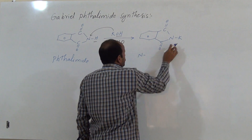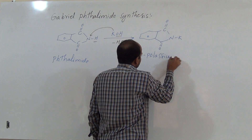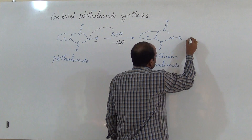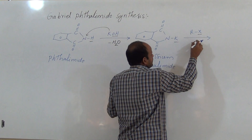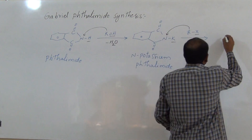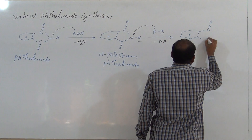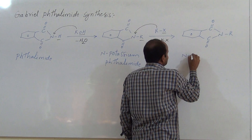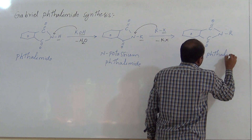Thus we get potassium phthalimide, where potassium is present on nitrogen — hence it is called N-potassium phthalimide. This is again reacted with an alkyl halide. Then K+ and X- are removed as KX, and the alkyl group is attacked on nitrogen. Thus we get N-alkyl phthalimide, where an alkyl group is on nitrogen.